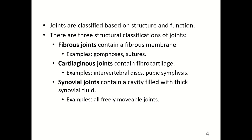Joints are classified based on structure and function. There are three structural classifications of joints. Fibrous joints contain a fibrous membrane; examples include gomphoses and sutures. Gomphoses hold the teeth in the jaw and sutures connect the facial and cranial bones. Cartilaginous joints contain fibrocartilage. Examples include the intervertebral discs and pubic symphysis. Synovial joints contain a cavity filled with thick synovial fluid, and all freely movable joints are synovial joints.